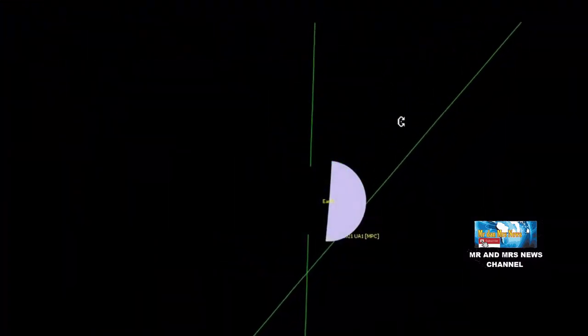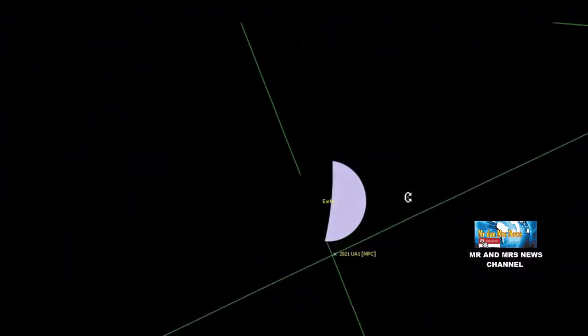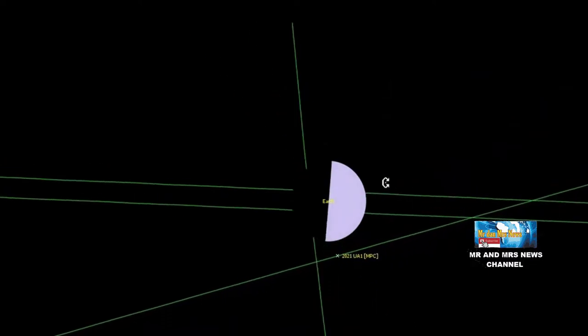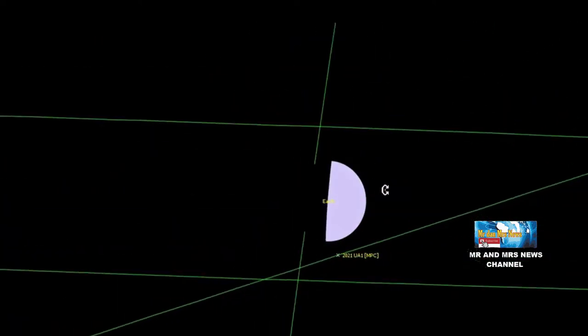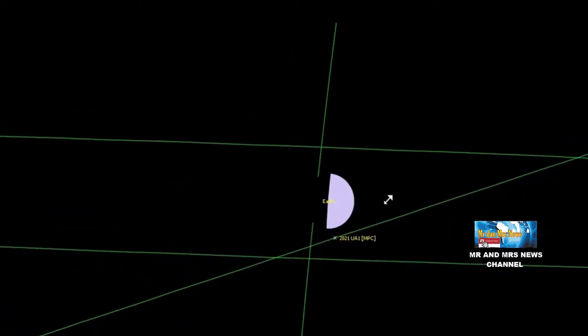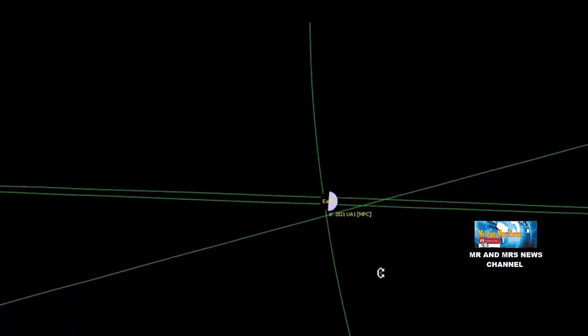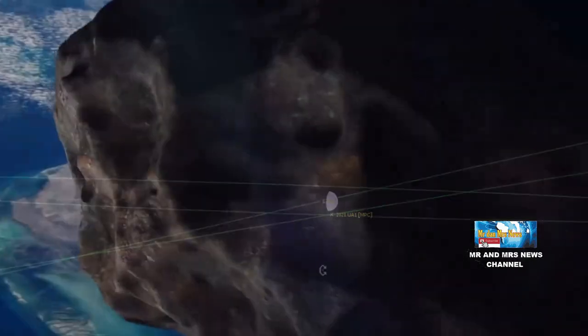Kejadian ini luput dari pantauan NASA dikarenakan asteroid yang diberi nama 2021 UA1 ini datang dari arah matahari sehingga menyulitkan pengamatan. Kemudian asteroid ini melintas pada jarak yang sangat dekat dengan bumi hanya sekitar 3.000 km.